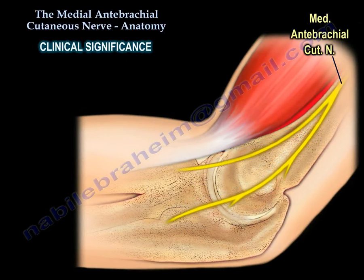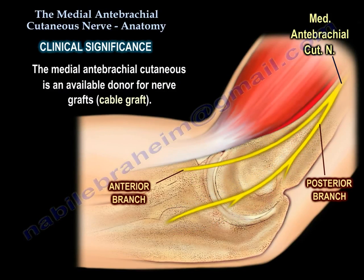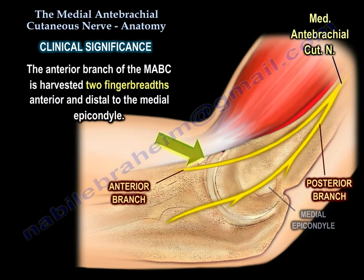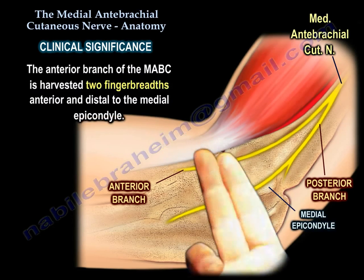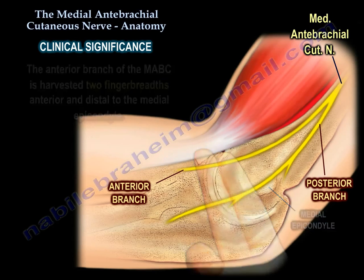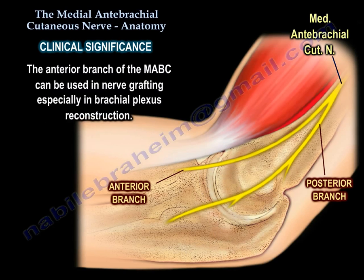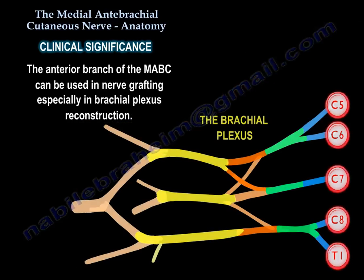Clinical Significance #1: The Medial Antibrachial Cutaneous Nerve is an available donor for nerve graft (cable graft). The anterior branch is harvested two finger-breadths anterior and distal to the medial epicondyle, and it is used as a graft for repair of traumatic defects greater than one centimeter of the digital nerves. The anterior branch is also used in nerve grafting of the brachial plexus.